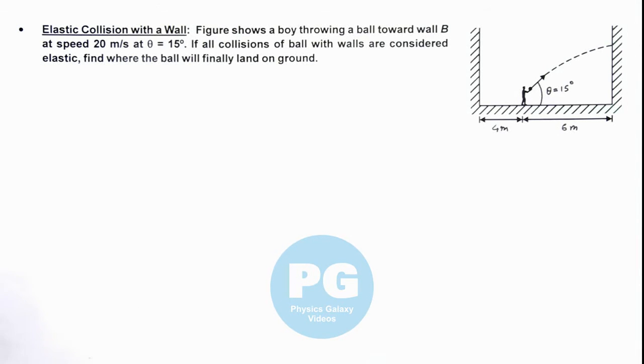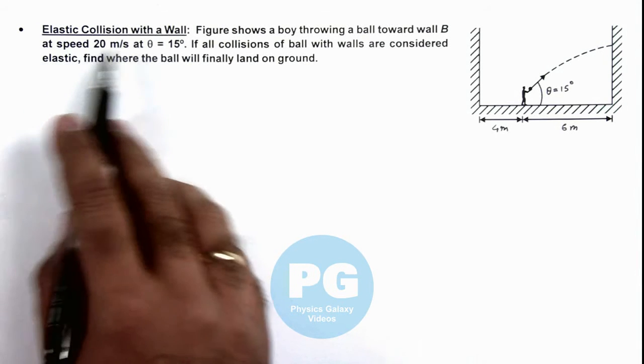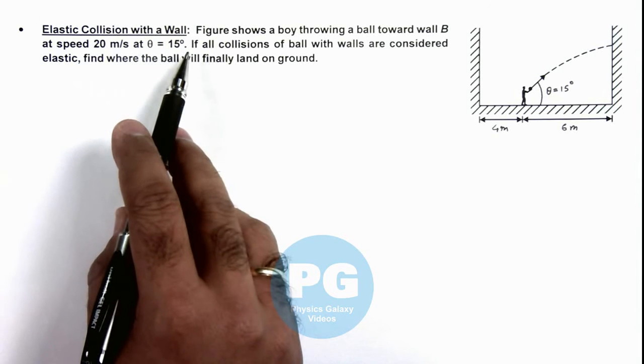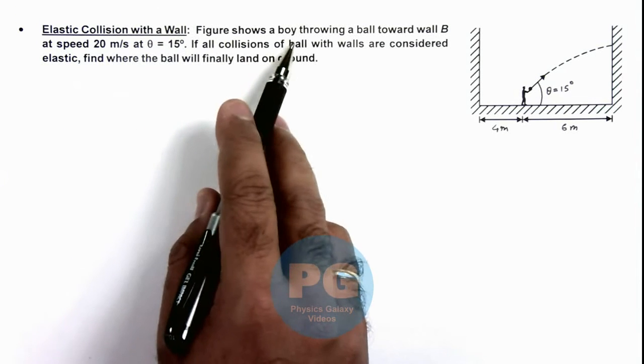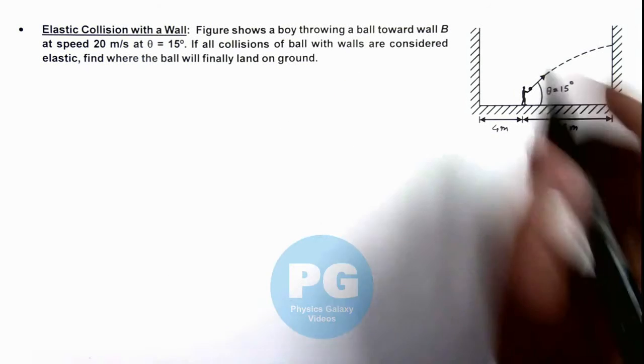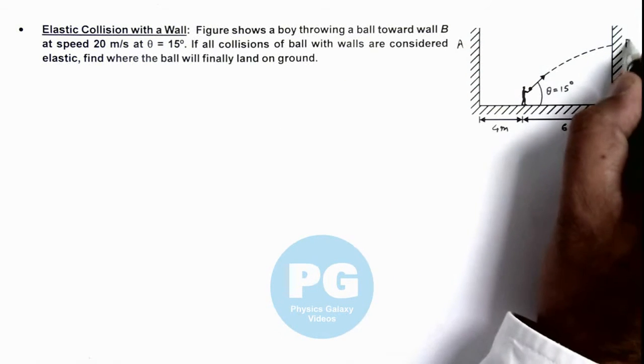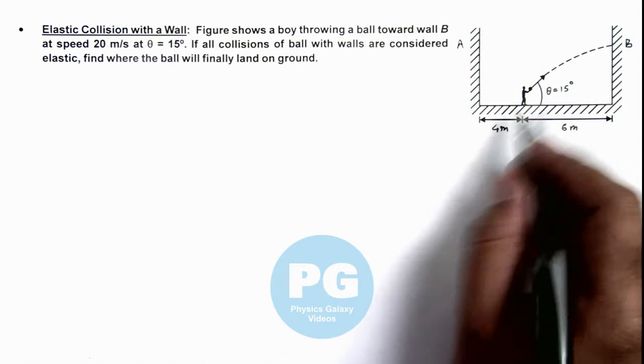In this illustration, we'll discuss the elastic collision with a wall for a projectile. Here the figure shows a boy throwing a ball toward wall B. There are two walls, A and B, and the boy is throwing a ball towards wall B.